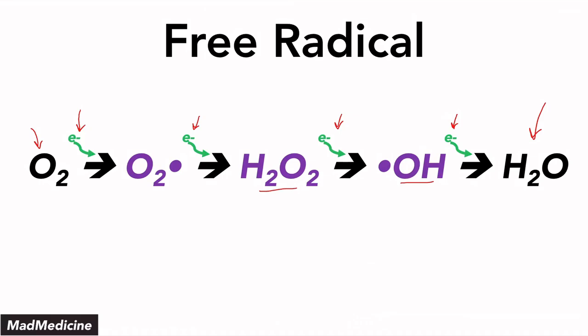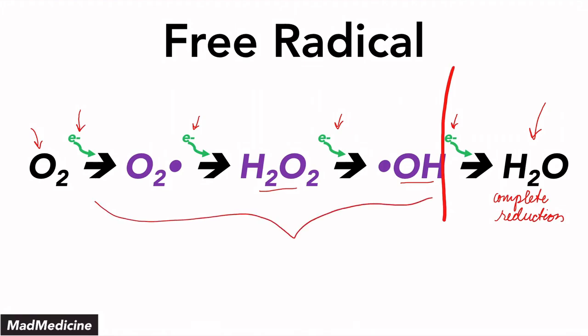But like we said earlier, if you have partial reduction — meaning if you stop the reduction anywhere short of the fourth electron — you are going to have the formation of these free radicals: the oxygen free radical, hydrogen peroxide, and the hydroxide free radical.